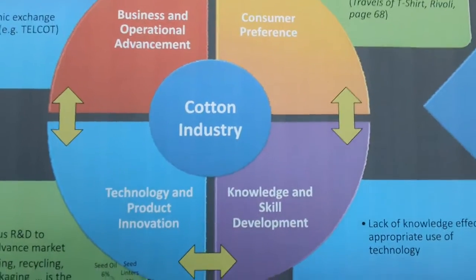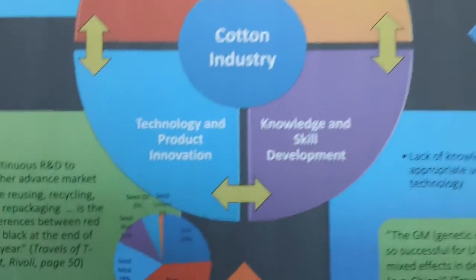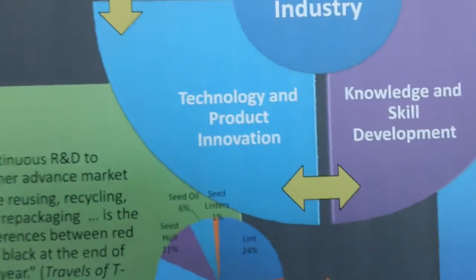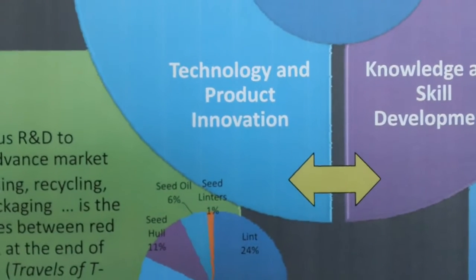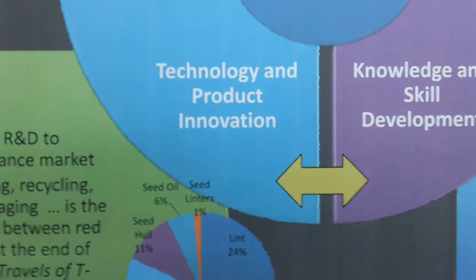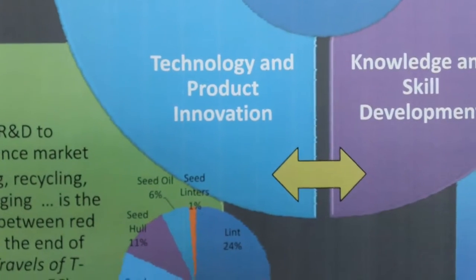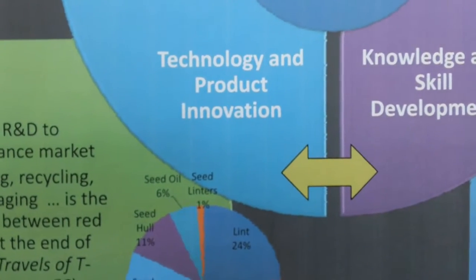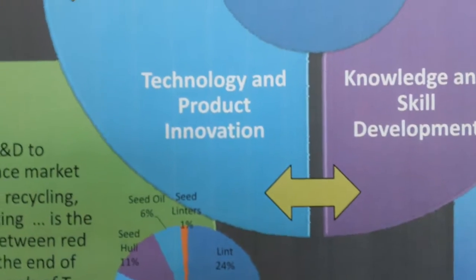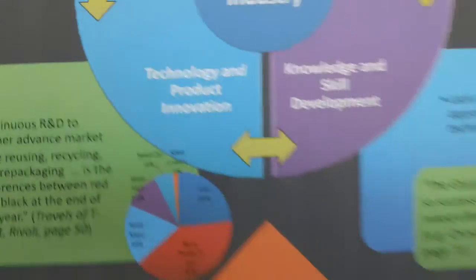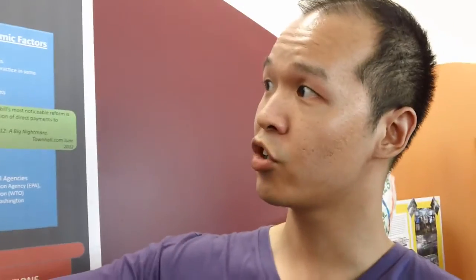You have to have technology and product innovation in order to push forward the economy of the cotton industry. In this chapter, they were talking about using the different parts of the cotton as new products.